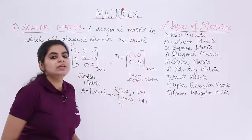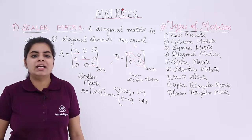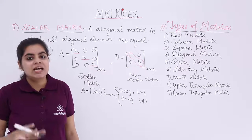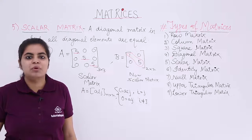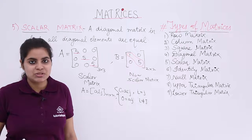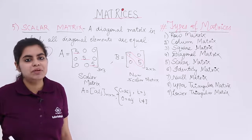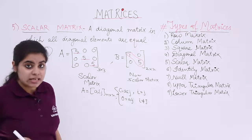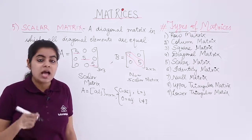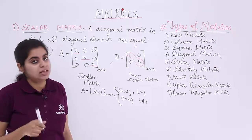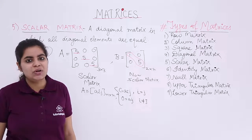So in this video, we saw what we mean by a scalar matrix. A scalar matrix is basically a type of diagonal matrix wherein the diagonal entries have to be equal and they have to be non-zero.